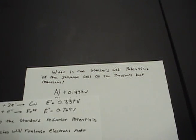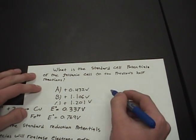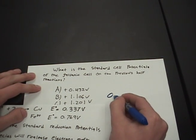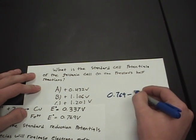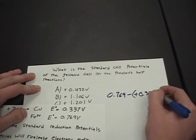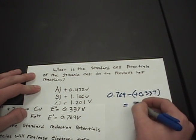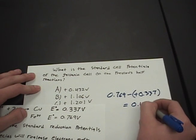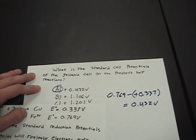Since copper is being oxidized and iron is being reduced, we write 0.769 minus positive 0.337, which gives us an answer of 0.432 volts. So our answer is A.